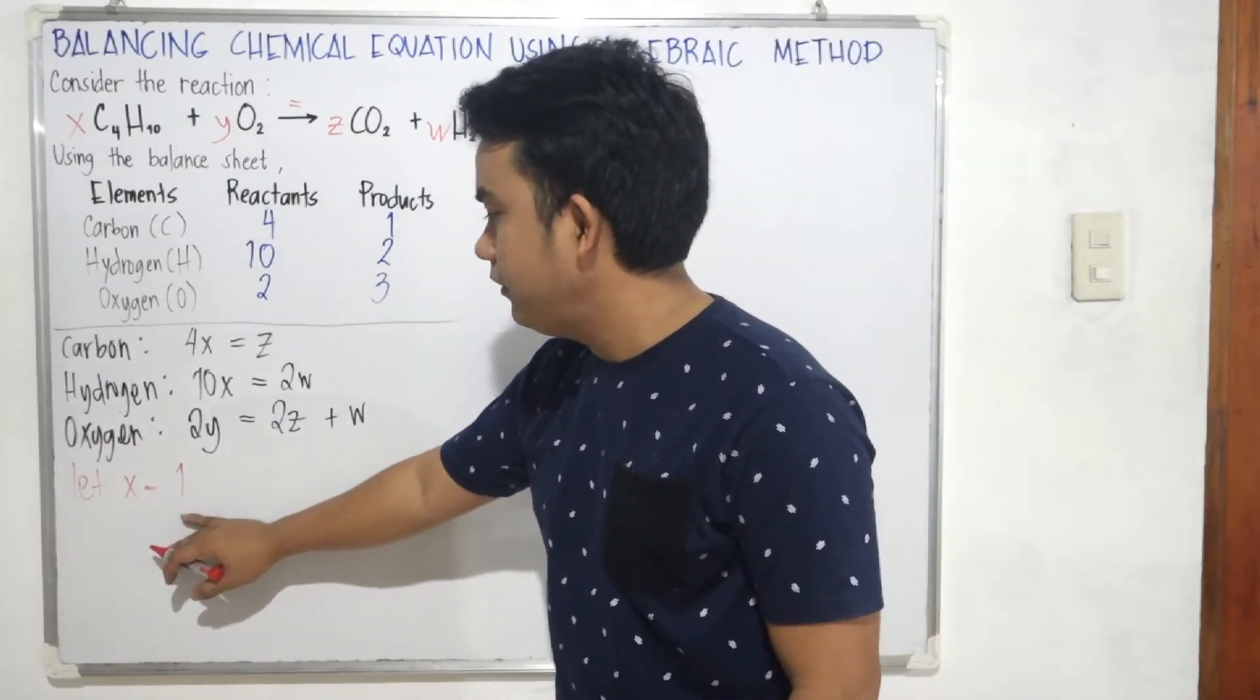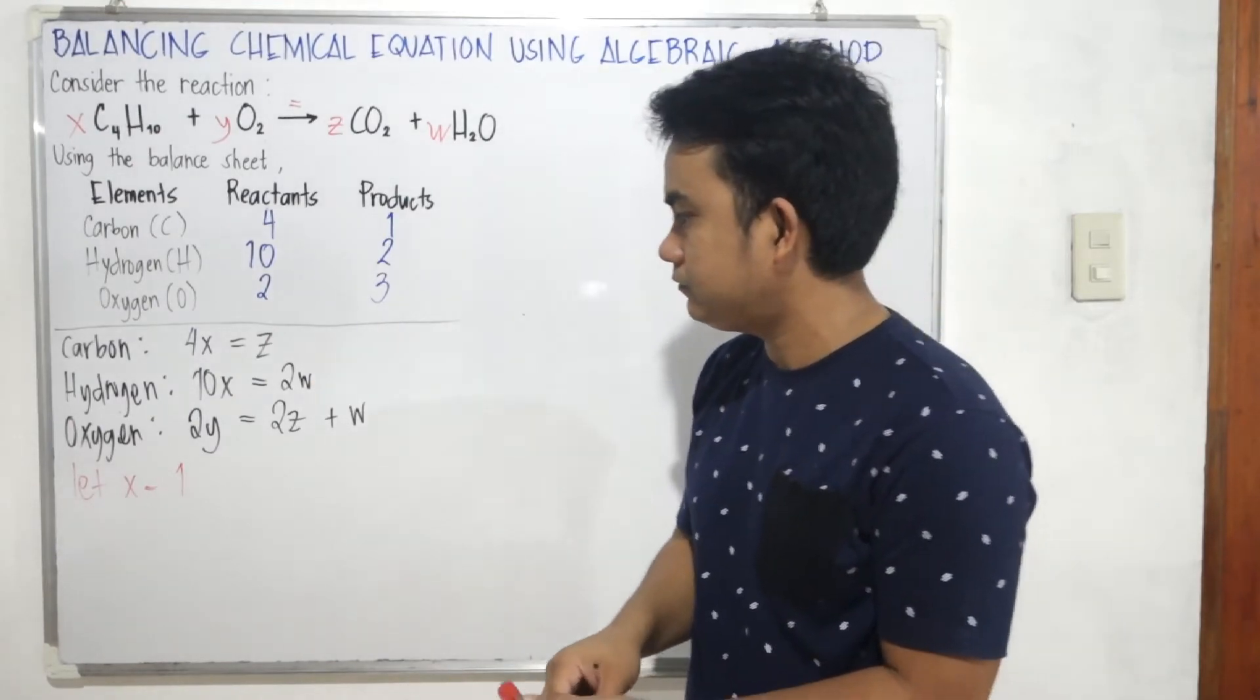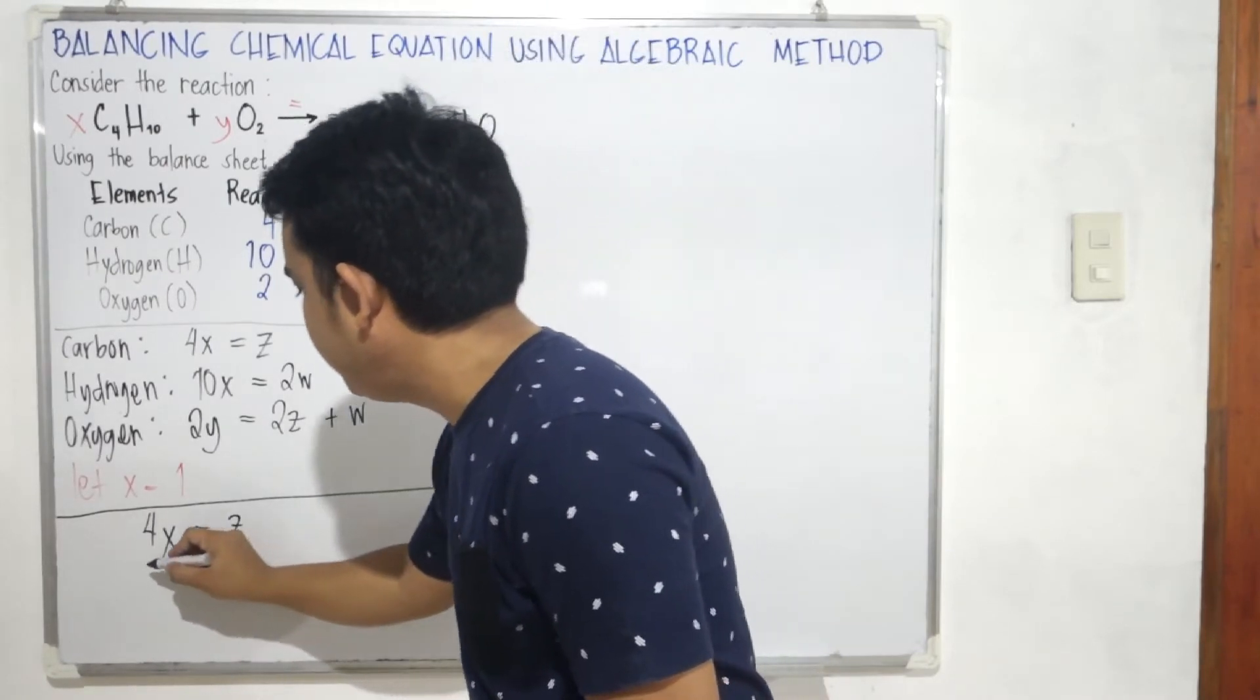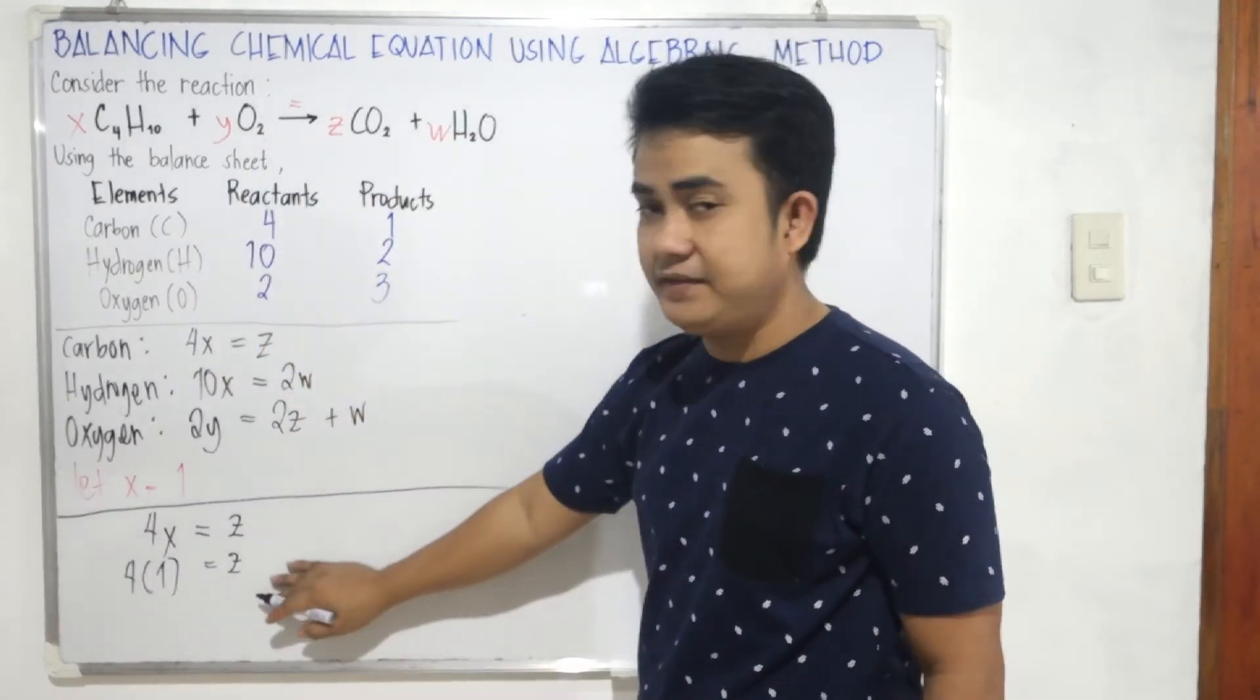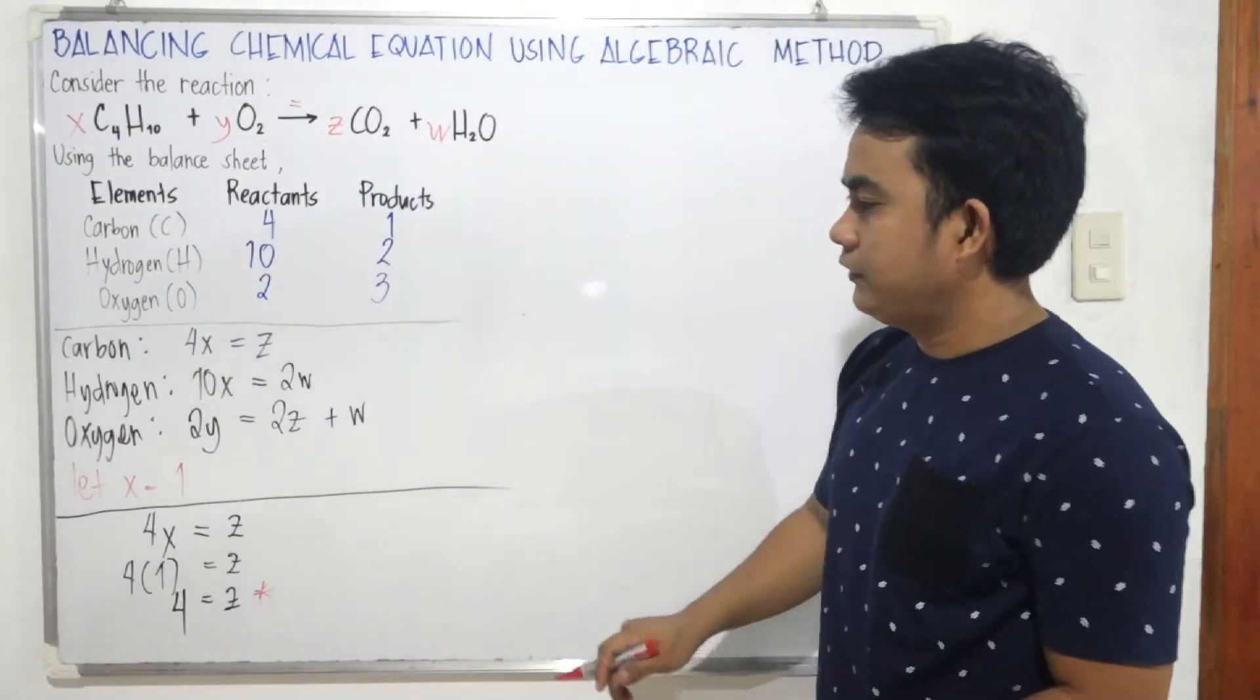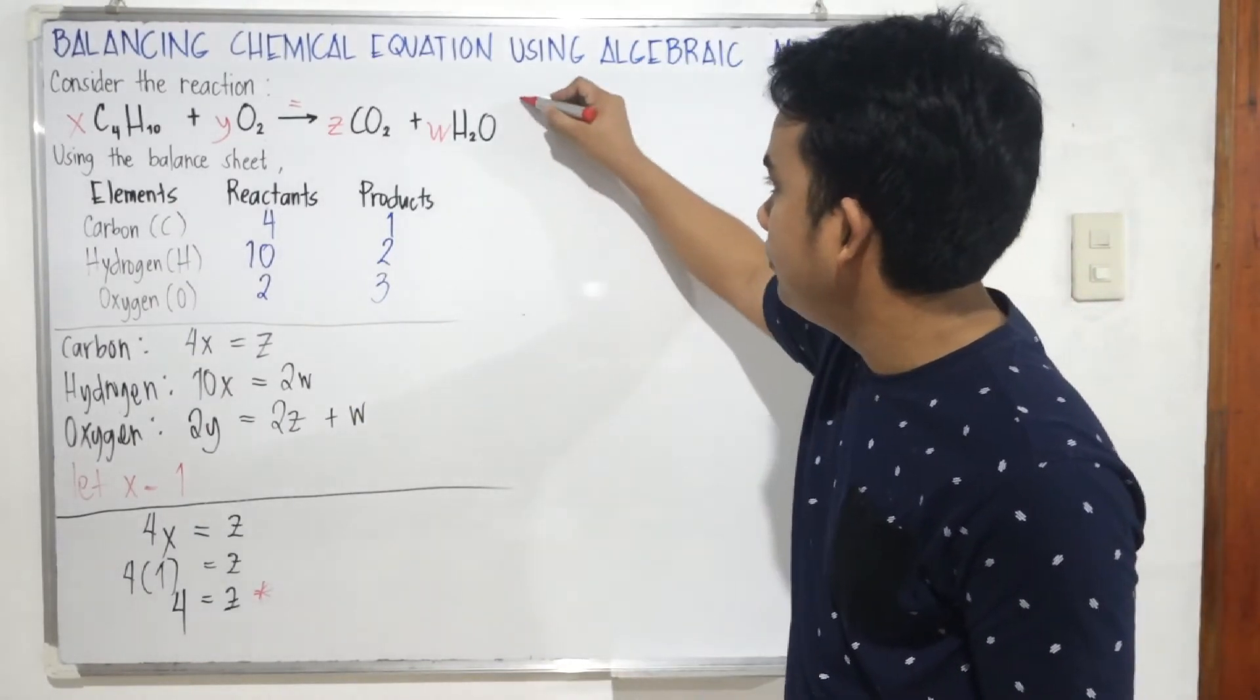So this time, I'll choose to assign x as 1 because the equation for carbon is simple. Let's assign x is equal to 1. Since x is equal to 1, we can get the other variables or the three remaining variables. Let's solve the carbon equation. Based from carbon, 4x equals z. Since x is 1, 4 times 1 equals z. So the value of z is equal to 4. So we now have two solved unknowns.